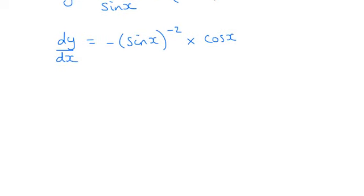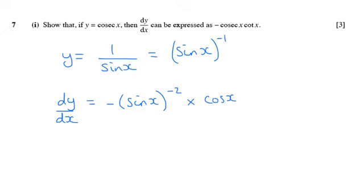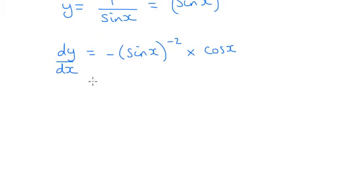So that's what we get when we differentiate. Obviously, that looks nothing like what they've given us here, but we can sort that out. We've got minus cos x over sine squared x. If I take this negative 2 to the bottom, that's going to be a sine squared x.